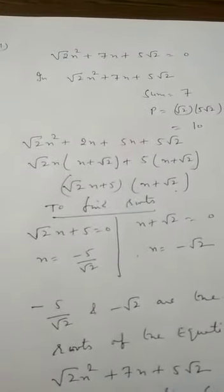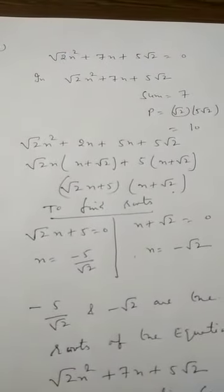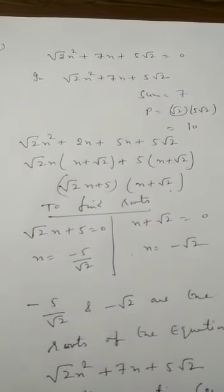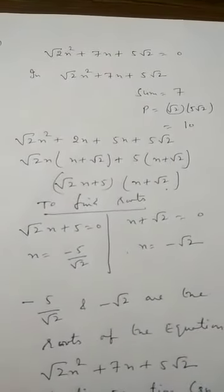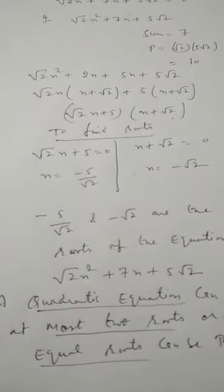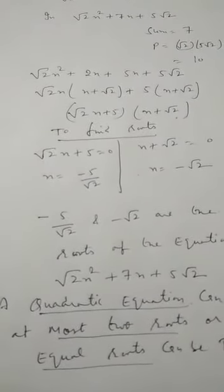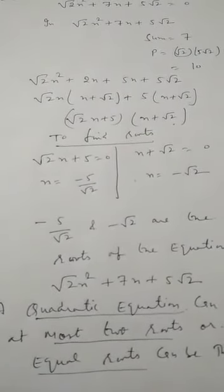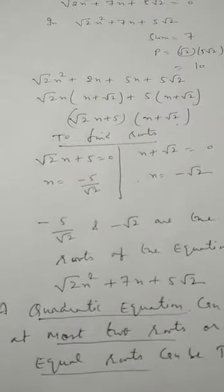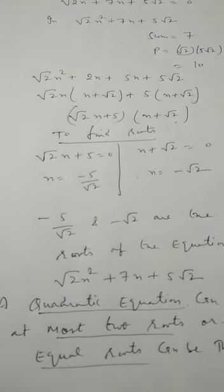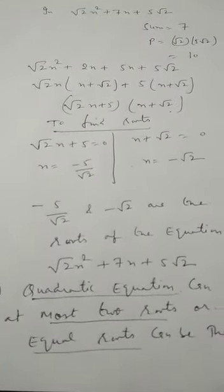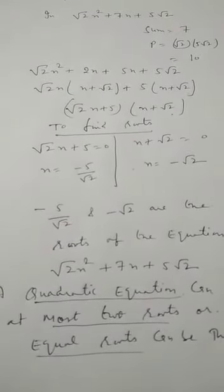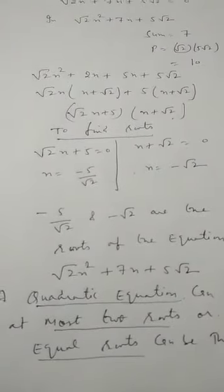The factors are root 2x plus 5 into x plus root 2 equal to 0. Putting root 2x plus 5 equal to 0 gives x equal to minus 5 by root 2, and x plus root 2 equal to 0 gives x equal to minus root 2. So the roots of this equation are minus 5 by root 2 and minus root 2. A quadratic equation can have at most two roots, or the roots can also be equal, which we will discuss in the next question.